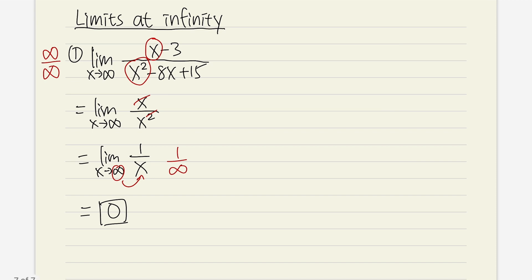The reason we get 0 is that the power on the top is 1 and the power on the bottom is 2. If the power on the top is less than the power on the bottom, then the answer is just going to be 0. Let's do a few more examples.